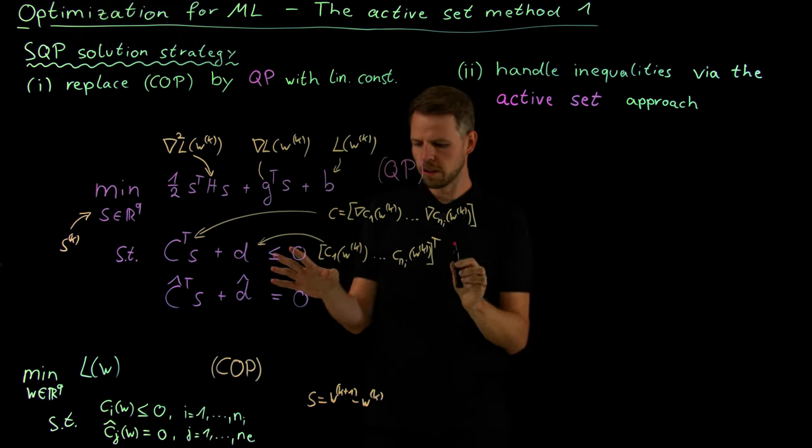Looking at the gradient of the loss function: the quadratic term gives H times S, and the linear term gives G. Then taking the derivative of C_A times S gives us the C matrix, so we get C-transpose times lambda. And similarly, the derivative with respect to S of the equality constraint term gives C-hat times mu. So the full KKT stationarity condition becomes: H·S + G + C_A^T·λ + C-hat^T·μ = 0.